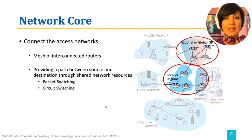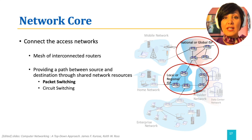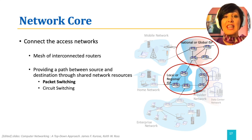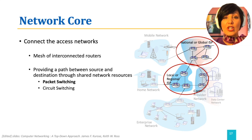There are two fundamental approaches to switching data through a network of links: packet switching and circuit switching. In circuit switching, the resources along the path — for example, links and buffers — are reserved for the whole duration of the communication between the end systems. This end-to-end reservation, or connection, is called a circuit.